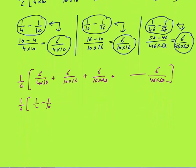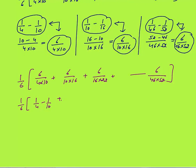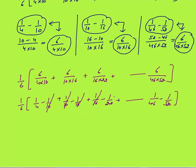Now I rewrite each term: 6/(4×10) = 1/4 − 1/10, then 6/(10×16) = 1/10 − 1/16, then 6/(16×22) = 1/16 − 1/22, and so on until 6/(46×52) = 1/46 − 1/52. The 1/10 and +1/10 cancel, then 1/16 cancels, and so on. The 1/46 also cancels. We are left with (1/6) × (1/4 − 1/52).